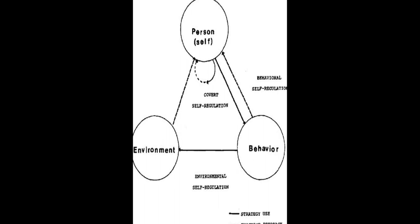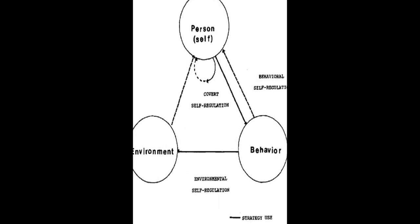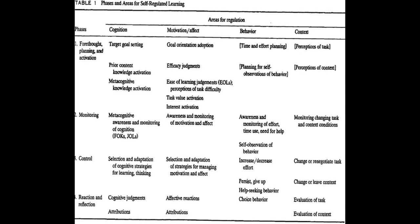The models are then compared in several aspects, such as phases and subprocesses, how they conceptualize metacognition, motivation, and emotion, top-down/bottom-up, automaticity, and context.